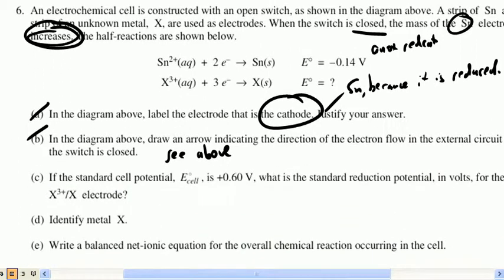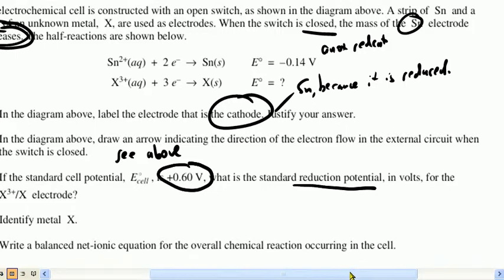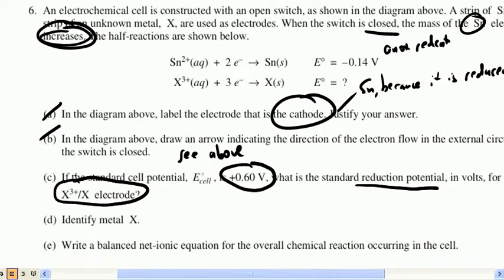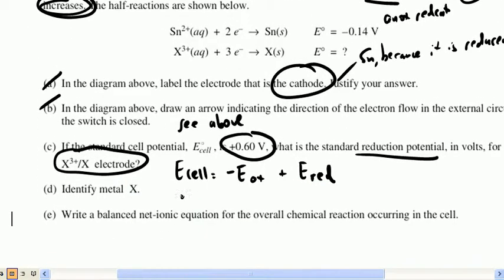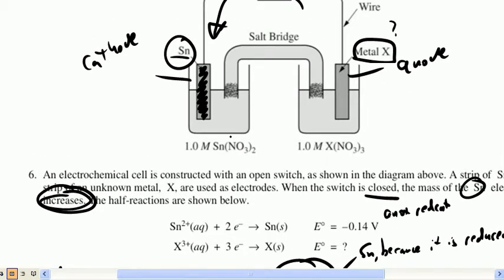They say, the standard cell potential, E_cell is 0.60 volts. What is the standard reduction potential in volts for the X electrode? Okay, so here we go. We know that E_cell equals negative E_ox plus E_red. So, we know that 0.60 volts is equal to negative E_ox plus E_red. The one that was reduced was the cathode. And the cathode is Sn. So, if we look on our reduction potential chart, Sn is negative 0.14 volts.